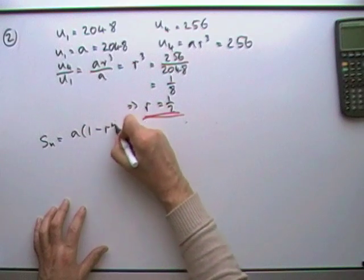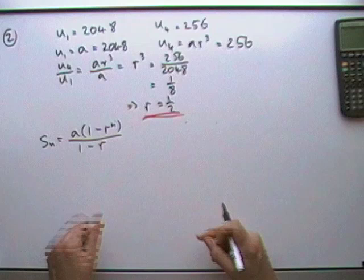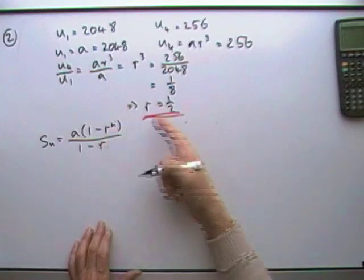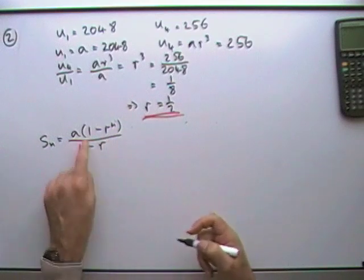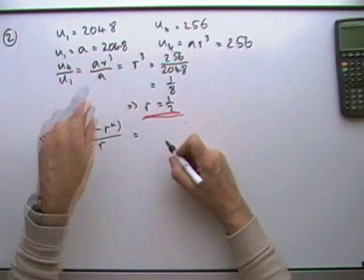The sum is given by A times (1 - R^N) over (1 - R), or the other way round if you will, reversing both subtractions to maintain the value. This is the better formula if R is going to be a proper fraction, so we're taking away a smaller amount. That equals 4088, but I'll put the values in first.